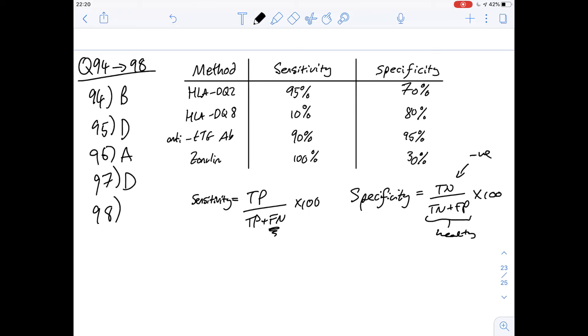And then finally question 98 and compared with the diagnosis using zonulin diagnosis using the anti-TTG antibody identifies a greater proportion of people with what? Okay so what's the difference between zonulin and anti-TTG?